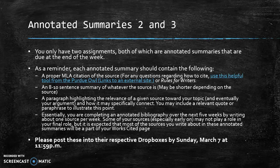There are two assignments due: annotated summaries two and three. As a reminder, each annotated summary should contain the following in this order: a proper MLA citation of the source — for any questions you can use the link that is a helpful tool from the Purdue OWL — an eight to ten sentence summary of the source, and a paragraph highlighting the relevance of the source toward your topic and eventually your argument and how it may specifically connect. You may include a relevant quote or paraphrase to illustrate this point. Each annotated summary needs to be two paragraphs: the first a summary, the second a connection to how the research will connect to your argument.